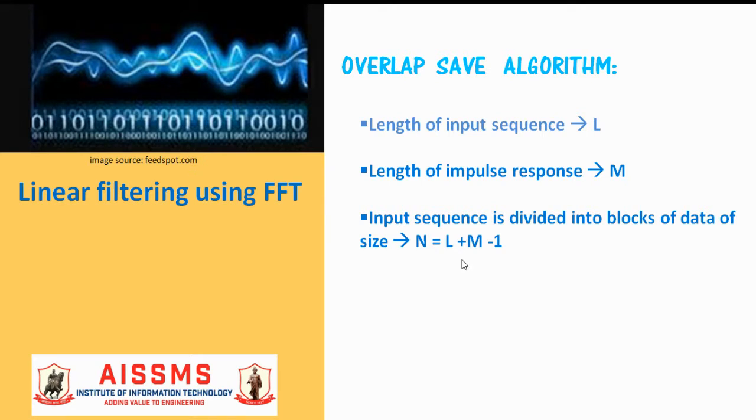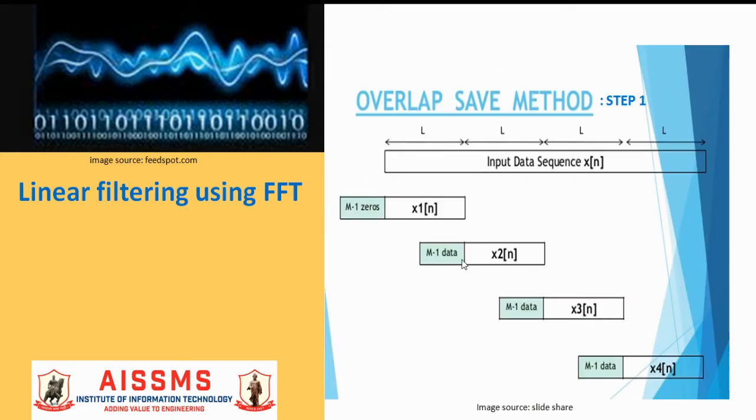Now the step 1 of this algorithm states that: Take L samples of the data sequence X of M. Append M minus 1 samples of the previous block to the start of the next block, and so on, so that the length of each of the block will be L plus M minus 1. But for the first block, there are no previous blocks. Therefore, we append M minus 1 zeros at the start of this block.